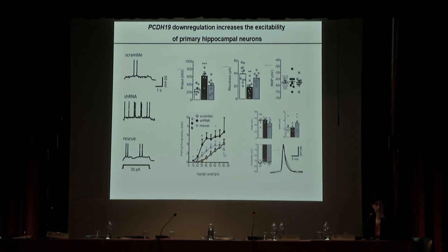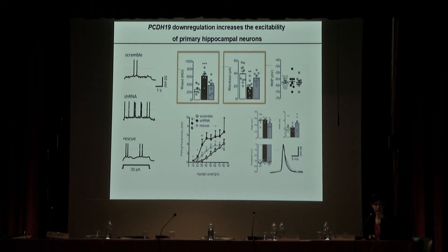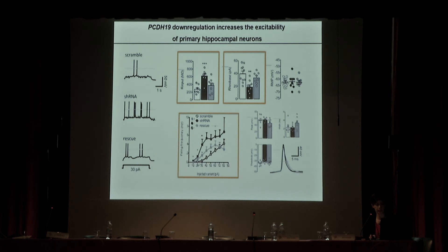We measured action potentials in scramble, shRNA-expressing, and rescue neurons. We noticed an increase in input resistance, which correlates well with the decrease of tonic current. There is a significant decrease in rheobase, meaning we need to inject a reduced amount of current to evoke an action potential — indicating the cell is hyper-excitable. Accordingly, for a given injected current, we see a higher spiking frequency in neurons where protocadherin-19 has been down-regulated. Other parameters such as resting membrane potential, action potential shape, and threshold were unaffected.